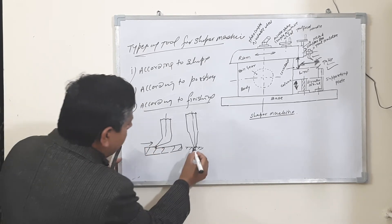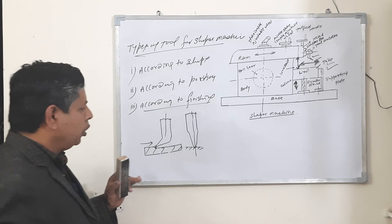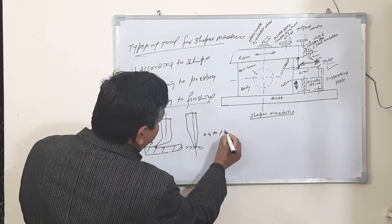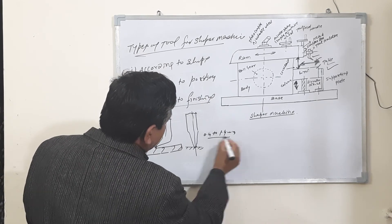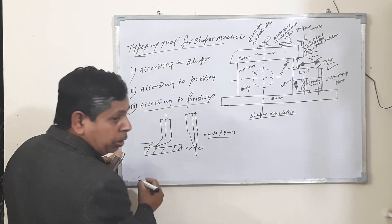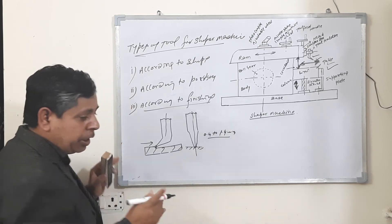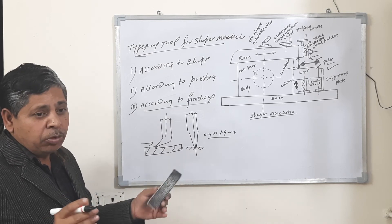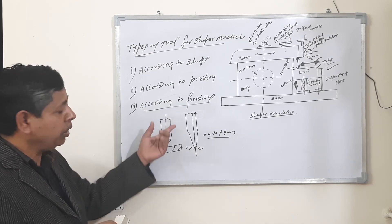This is the nose radius. The nose radius is 0.4 to 1.4 mm to increase the strength of the tool and also increase the contact surface area, so that you will get good finishing on the surface of the components.